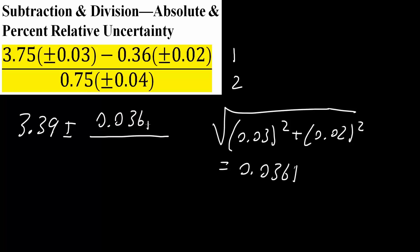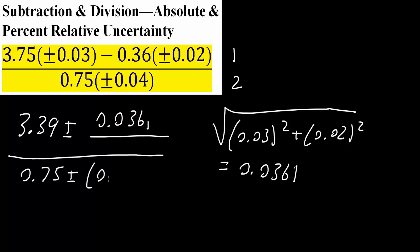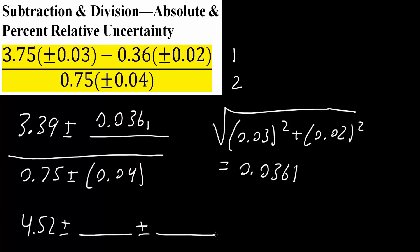This right here is just the numerator, and this itself is the absolute uncertainty, not the percent relative uncertainty. Next we will divide this number by 0.75 ± 0.04. From here we will get the absolute and percent relative uncertainty for this entire problem. So 3.39 divided by 0.75 would be 4.52, plus or minus the absolute uncertainty and the percent relative uncertainty.